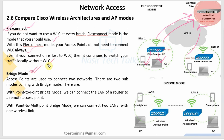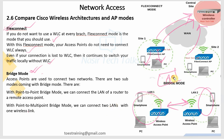Bridge mode is used to connect two networks using access points - point-to-point or point-to-multipoint bridge mode. With point-to-multipoint bridge mode, you can connect two LANs wirelessly. That covers today's session on Cisco Wireless Architecture and AP modes. The next video will cover Wireless LAN Controller (WLC). Thank you for watching.